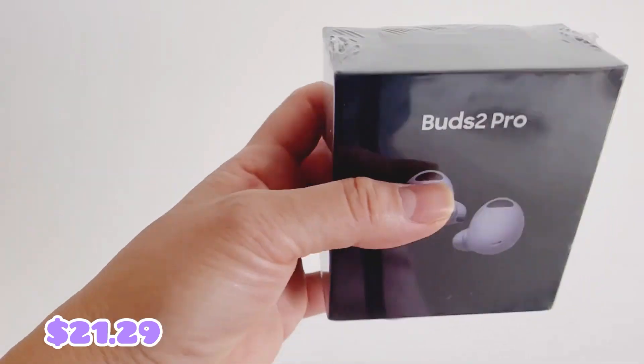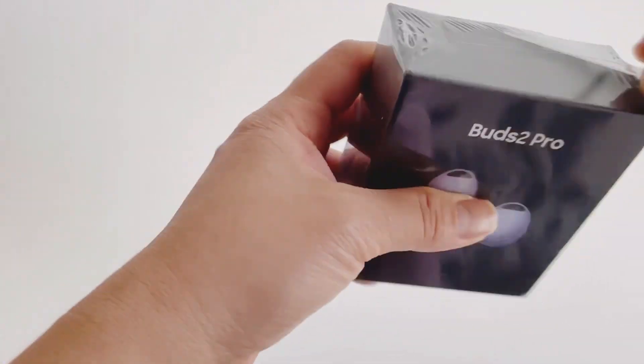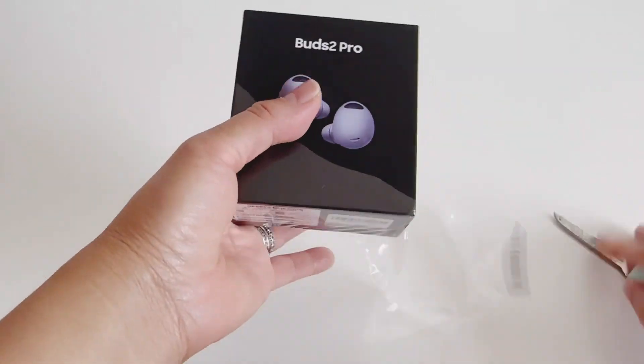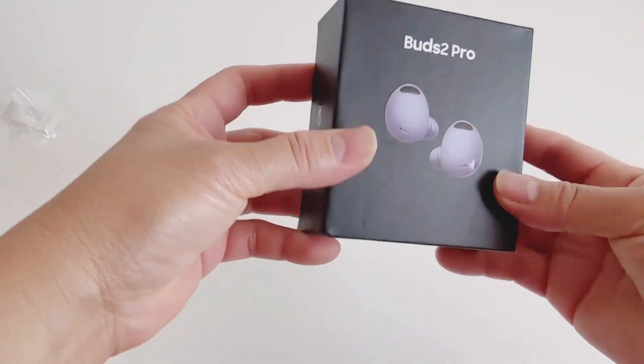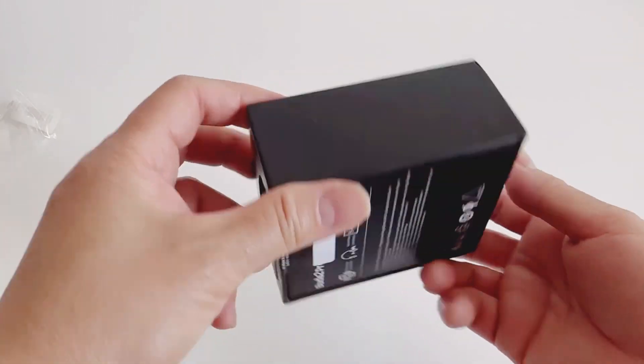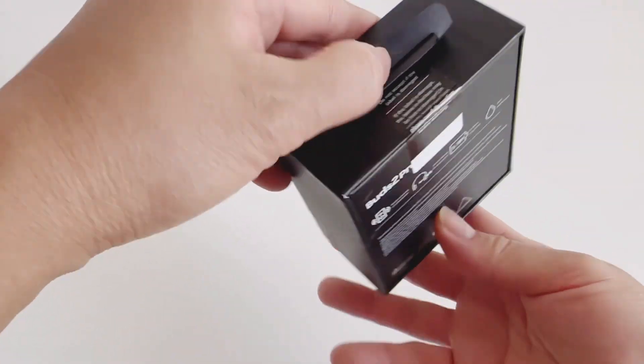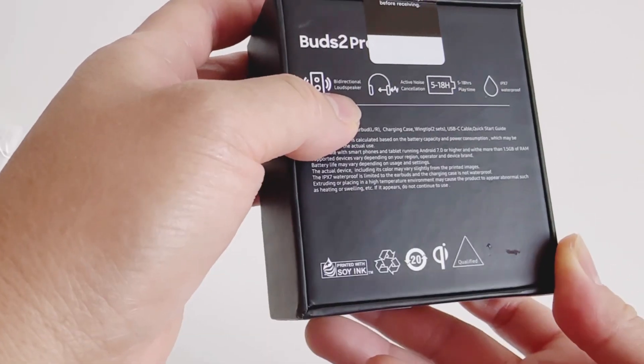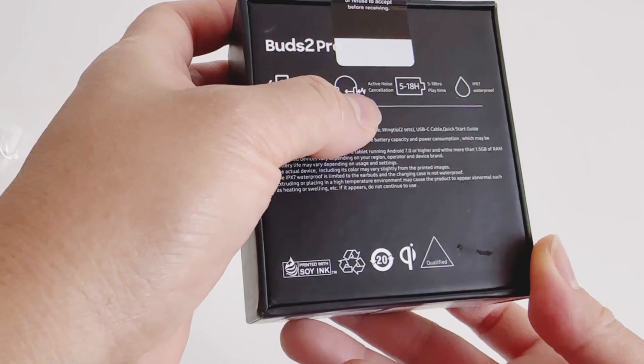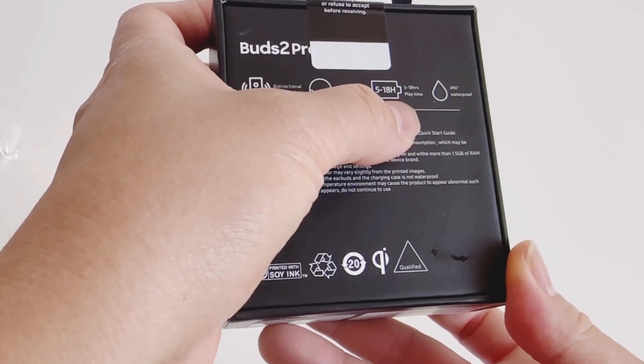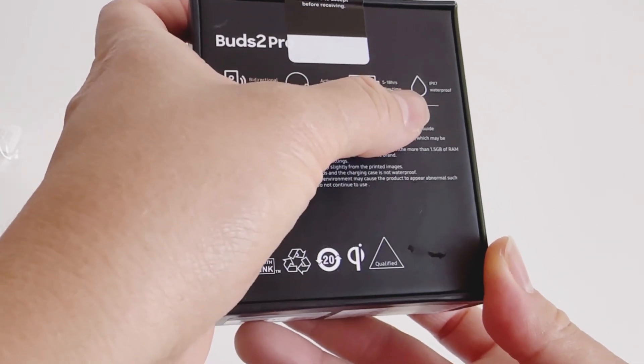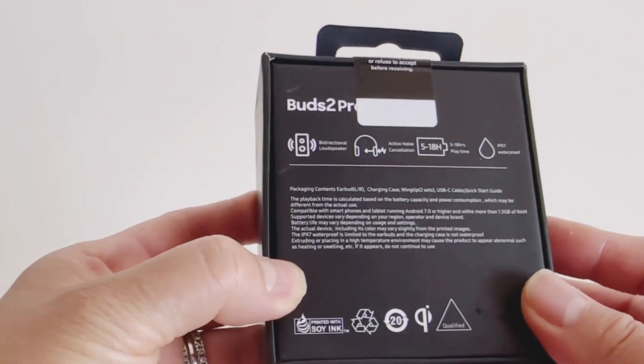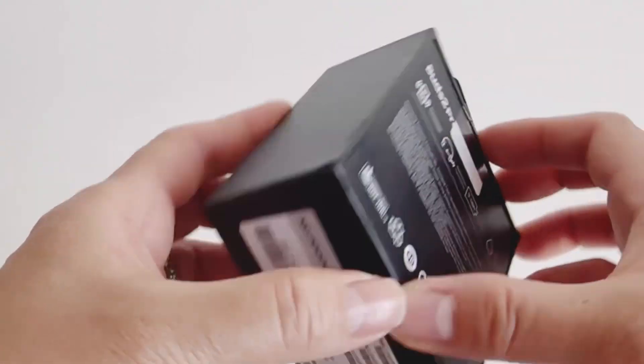So let's get in. Looks nice though. Look at that, Buds Pro, really look nice. The packaging too. It said here loudspeaker, active noise, 5 to 18 hours playtime, IPX7 waterproof, bi-directional. Nice, okay so let's open it.